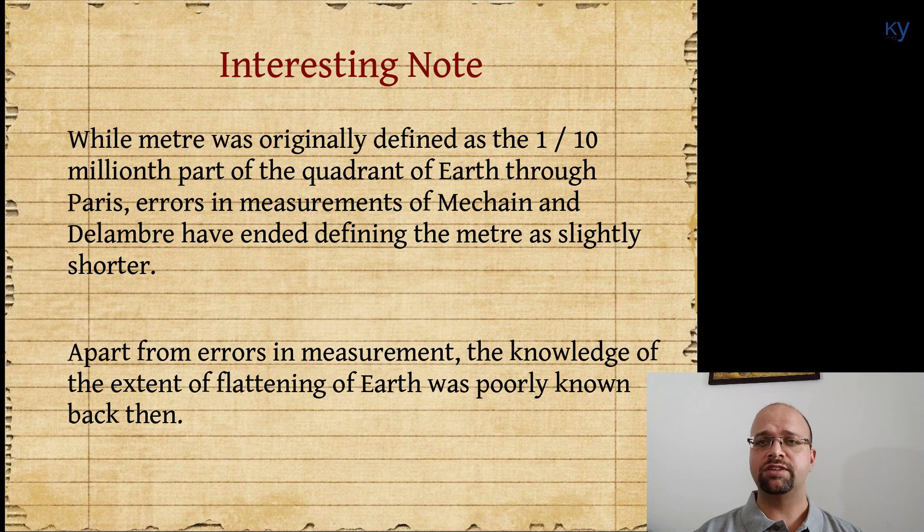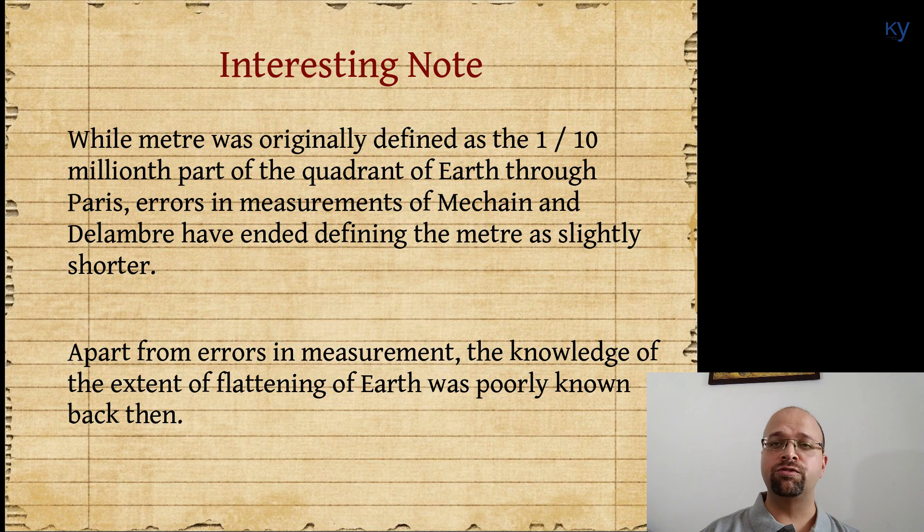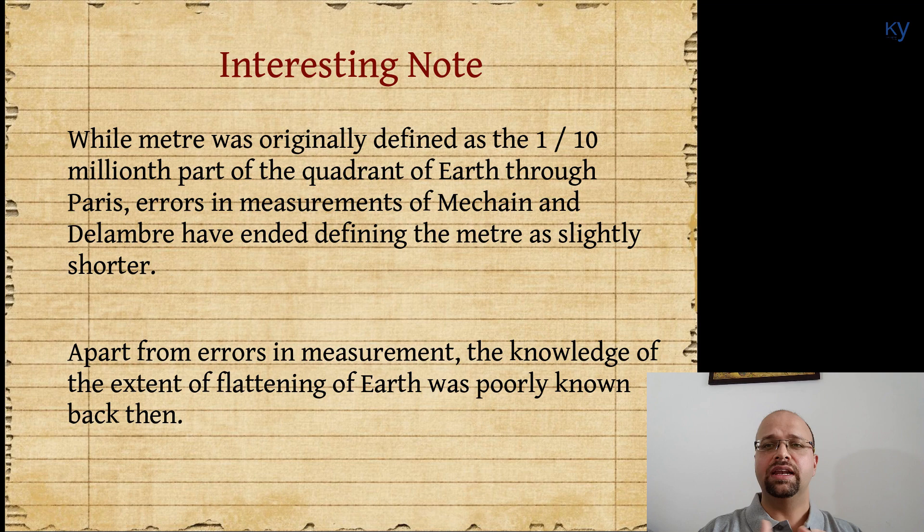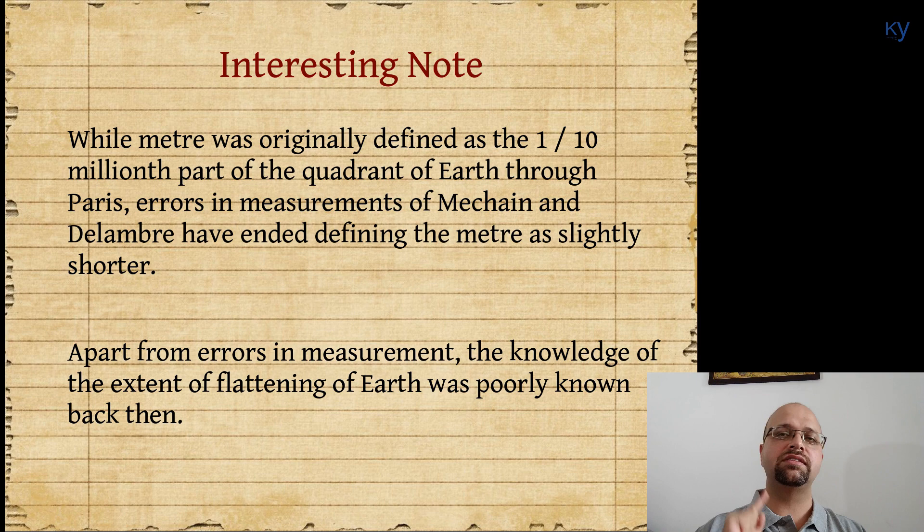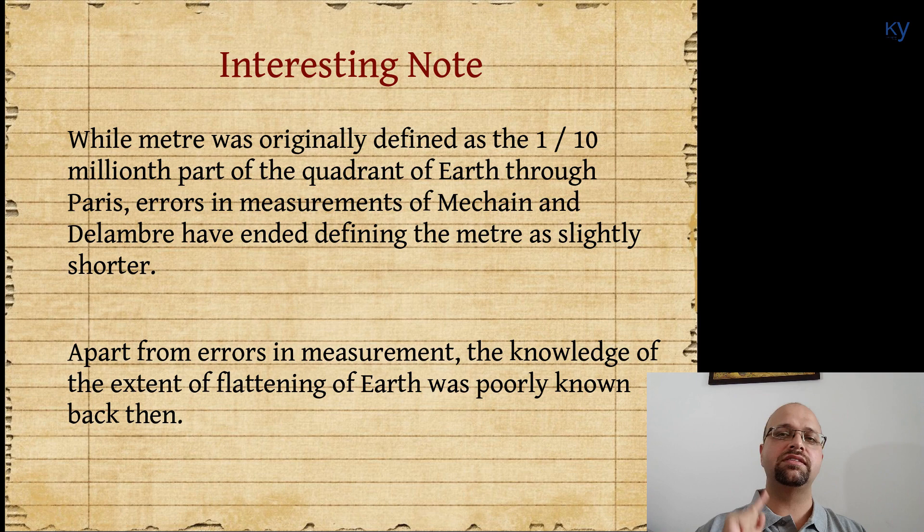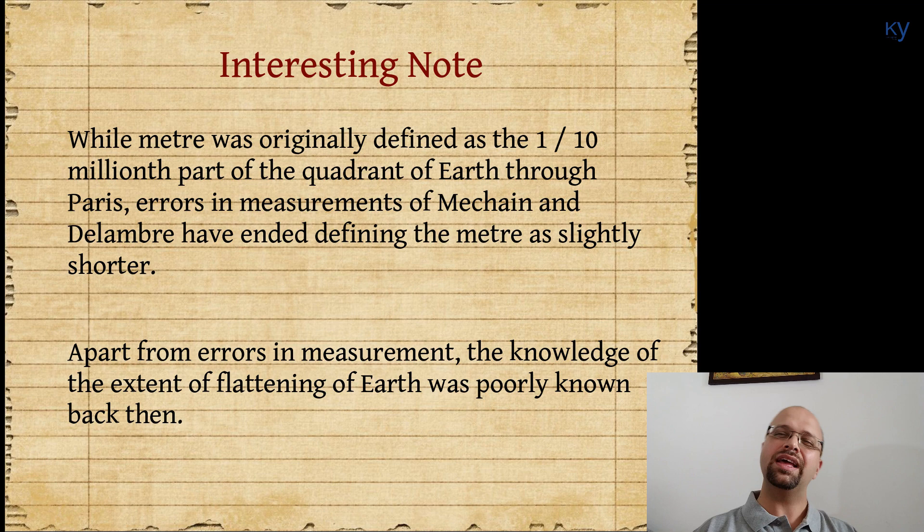It's interesting to note that while the meter was actually defined as 1/10 millionth of the quadrant of earth, obviously because of the lack of good instruments at that time and all kinds of difficulties, Delambre and Mechain made some mistakes in their calculations. So according to this definition, the meter that we use today is actually slightly shorter. But it doesn't matter. What matters is that the definition of meter remains same throughout the world. That is more important than it being exactly equal to 1/10 millionth of a quadrant.